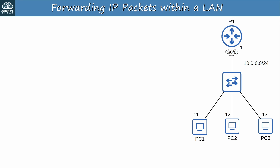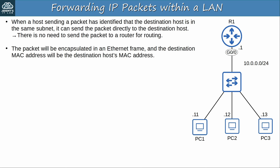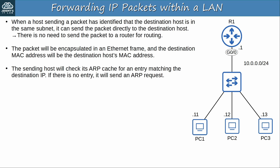Now let's take a closer look at how a host forwards a packet within a LAN. When a host sending a packet has identified that the destination host is in the same subnet — by using the XOR and AND operations — it can send the packet directly to the destination host. There is no need to send the packet to a router for routing. Routers route packets between networks, not within the same network. So the packet will be encapsulated in an Ethernet frame, and the destination MAC address will be the destination host's MAC address. The source host will check its ARP cache for an entry matching the destination IP; if there is no entry, it will send an ARP request.